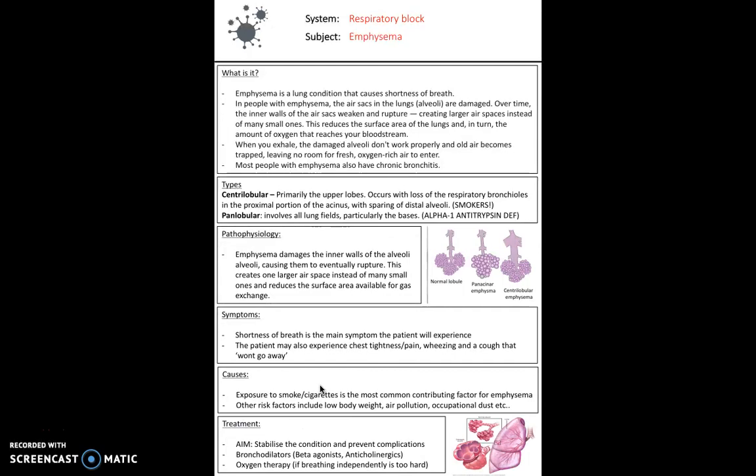So next, we looked at emphysema. So this is a lung condition that causes shortness of breath. The air sacs, so the alveoli, have become damaged. The inner walls of the air sacs weaken and rupture, creating larger airspaces instead of smaller ones. So the problem with this is it reduces the surface area of the lungs, and therefore it reduces the amount of oxygen that's reaching your bloodstream. Usually people who have emphysema as well will also have chronic bronchitis. So divide them up into types. So understand that a normal alveoli, a normal lobule looks like this. This is what a panacinar looks like, and this is what a centrilobular emphysema looks like. So centrilobular, this one on this right-hand side, this usually occurs in the upper lobes, and it occurs with loss of the respiratory bronchioles in the proximal portion of the acinus, with sparing of the distal alveoli. This usually really occurs in smokers. Panlobular, or panacinar, so this involves all lung fields, particularly all the bases, and this usually occurs in people with an alpha-1 antitrypsin deficiency.